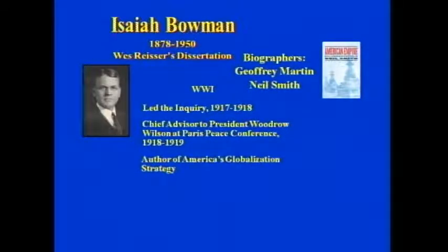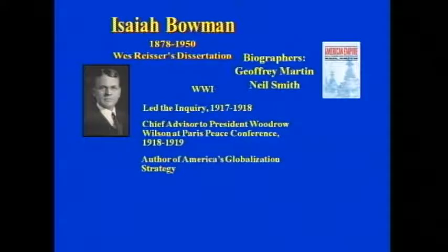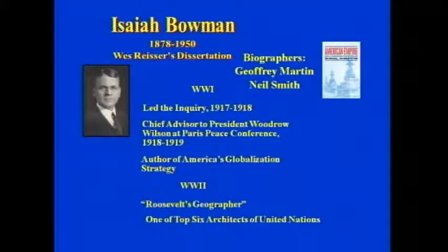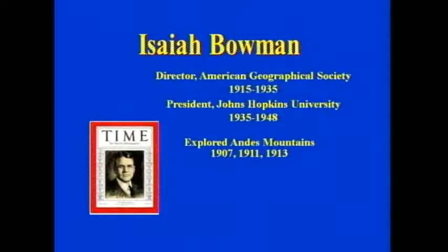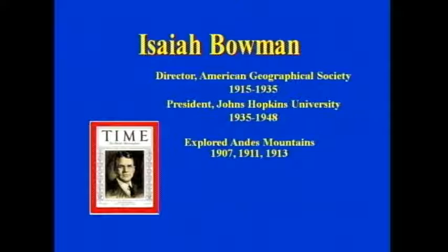Bowman was the author of America's globalization policy that said we could lead the world through economic and political means, not through military conquest. He was, to a lesser extent, Roosevelt's geographer in World War II, and was one of the top six architects of the United Nations. He was director of the American Geographical Society from 1915 to 1935, then became president of Johns Hopkins University. And, by the way, he explored the Andes Mountains and was second in command on the expedition that discovered Machu Picchu, though he never saw it himself.